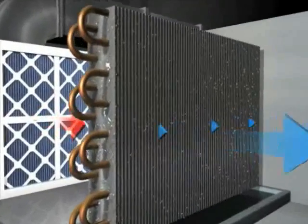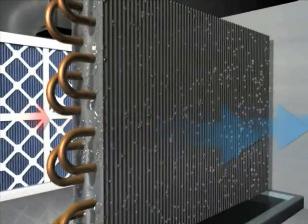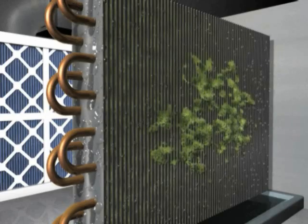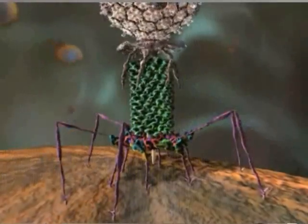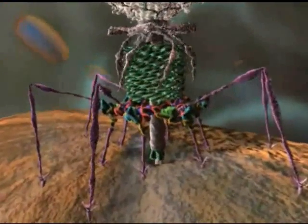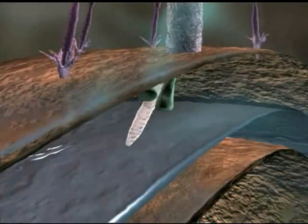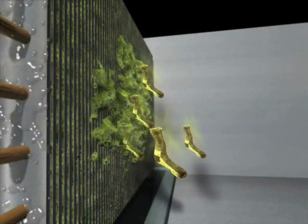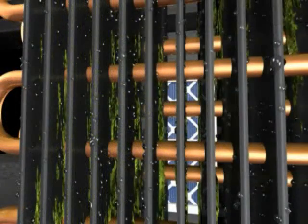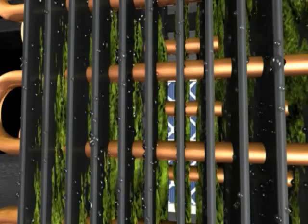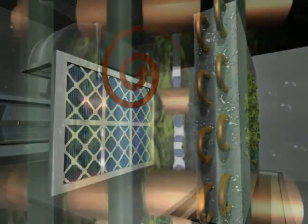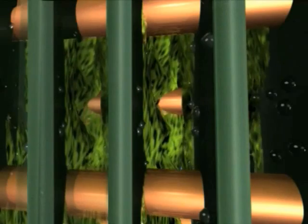The two biggest problems in air conditioning are the cost of operation and poor indoor air quality, both of which come from the biofilm growing on the coil, which consists of mold, bacteria, and viruses. The biofilm is also the cause for most odors. It blocks the space between the coils, restricting the airflow, and it covers the coil fins, reducing heat transfer and making it more difficult to make temperature.